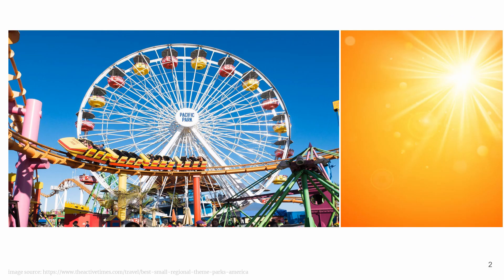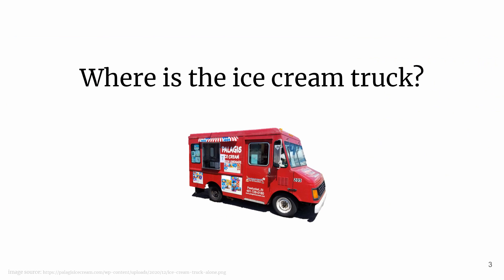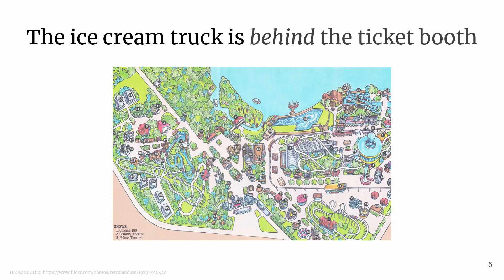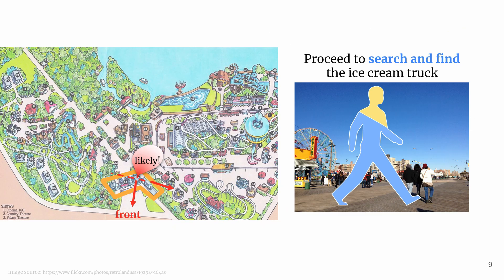Today I'm presenting our work titled Spatial Language Understanding for Object Search in Partially Observed City-Scale Environments. Imagine the following scenario: you are at an amusement park and it is very hot. Thinking of getting some ice cream, you go up to a passerby and ask, where is the ice cream truck? The passerby responds: it is behind the ticket booth. You then go to the map of the amusement park, locate the ticket booth, and infer a frame of reference for 'behind' based on the context. You are able to do this despite 'behind' being subjective to the passerby. You then infer a region that satisfies this description and proceed to search for the ice cream truck — and likely you'll find it.